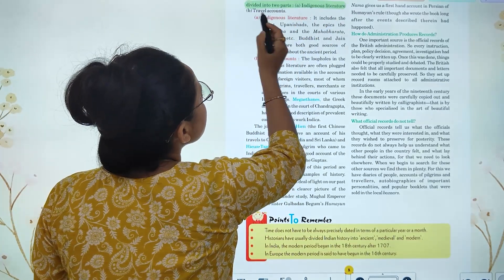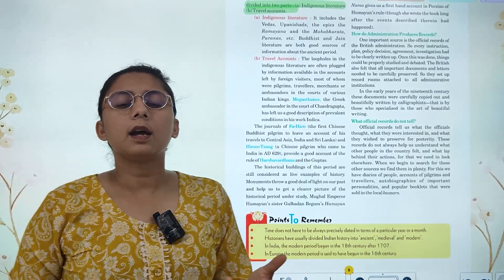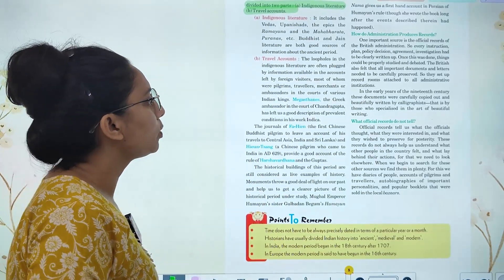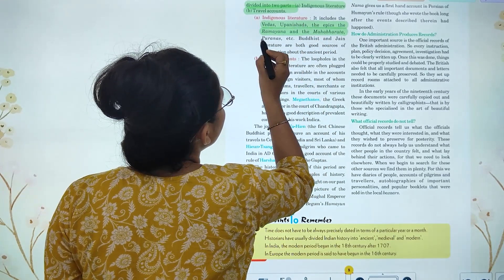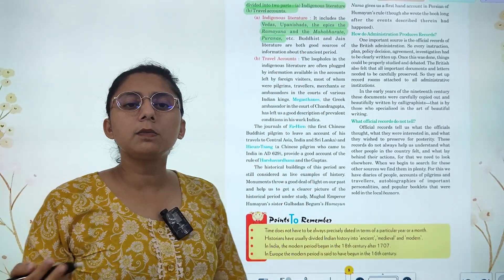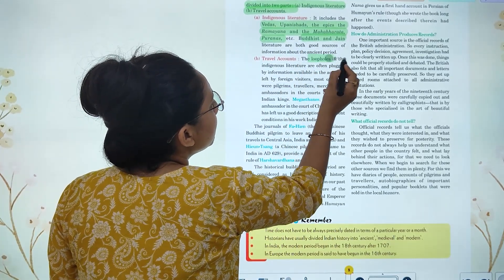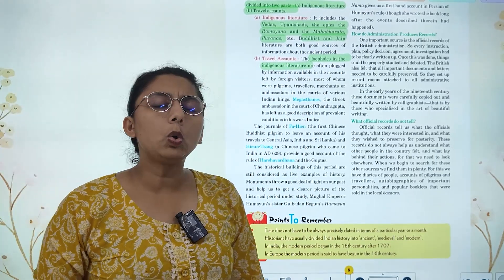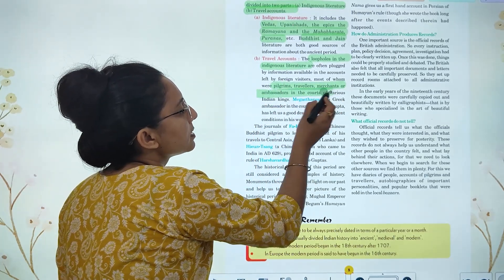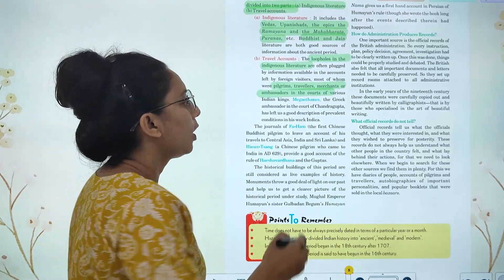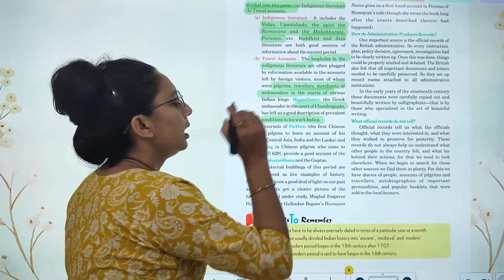We have divided sources into two parts: indigenous sources and traveler accounts. Indigenous sources include the Vedas, Upanishads, epics like the Ramayana and Mahabharata, and Buddhist and Jain literature — all important sources for the ancient period. As for traveler accounts, there are accounts left by pilgrims, travelers, and ambassadors. For example, Megasthenes was a Greek ambassador at the court of Chandragupta Maurya. He left a description of the conditions of India in his work, the Indica.